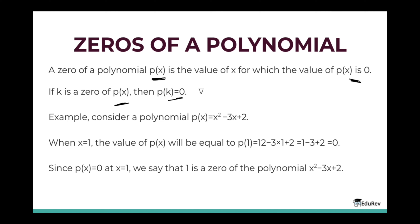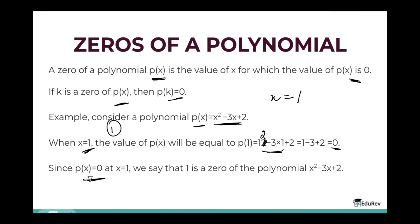For example, consider a polynomial p(x) = x² − 3x + 2. When x equals 1, the value of the polynomial p(x) is going to be what? I am going to substitute 1 in place of x. So p(1) is going to be 1² − 3×1 + 2, and this is going to be 0. Since p(x) is 0 at x = 1, we say that 1 is a zero of the polynomial x² − 3x + 2.